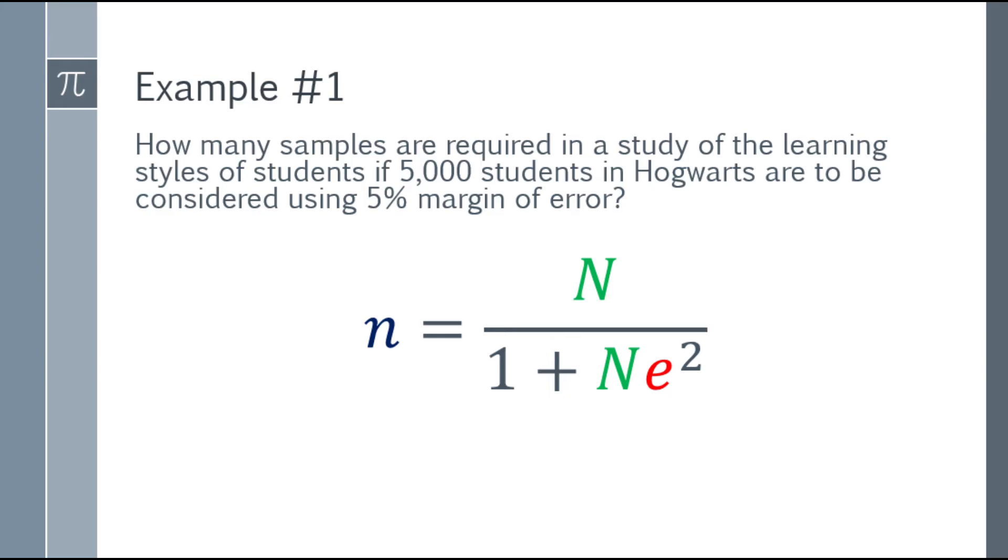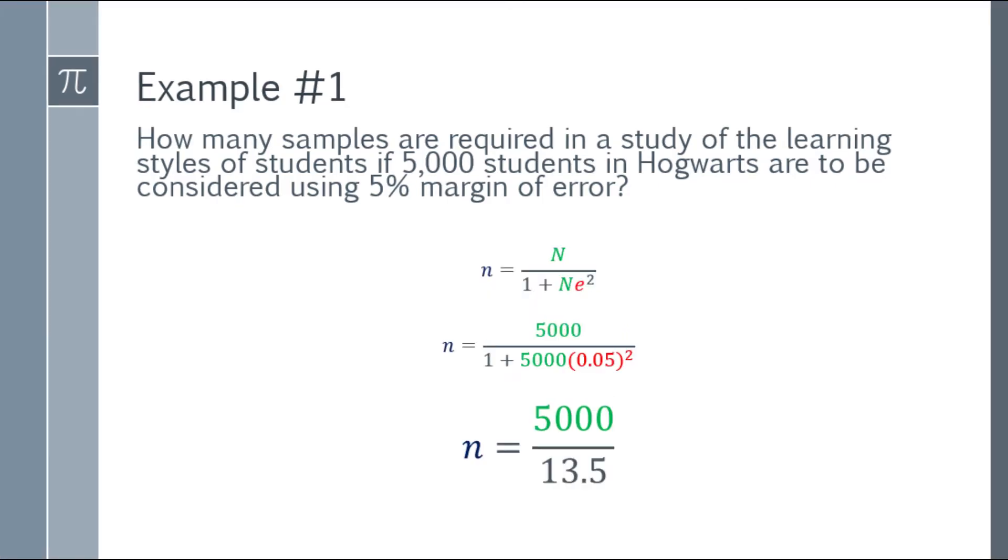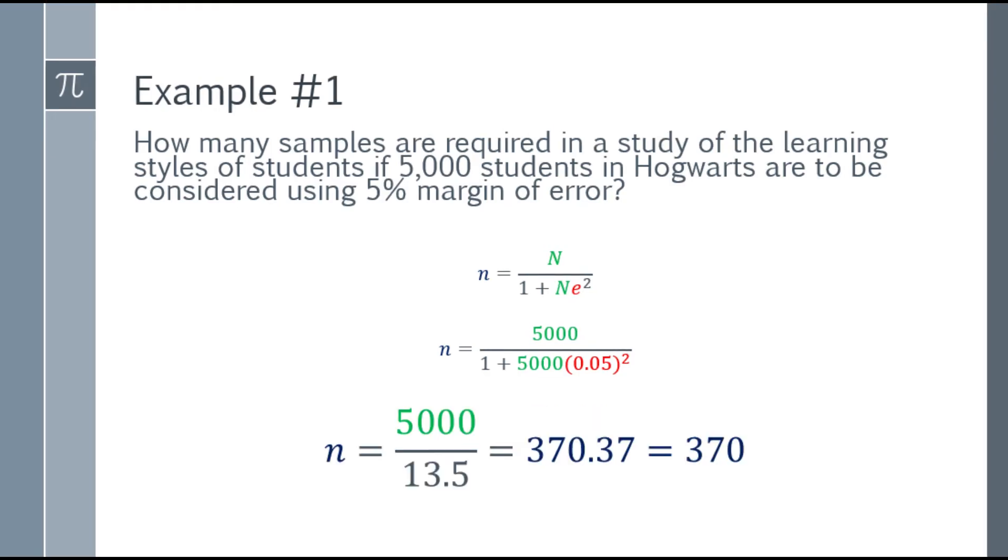Now let's substitute all the given. We have n equals 5,000 over the quantity 1 plus 5,000 times 0.05 square. Algebraically, you will arrive at 5,000 over 13.5, and the answer for that one will be 370.37, or 370 will be our answer, because we're looking for students or sample size.